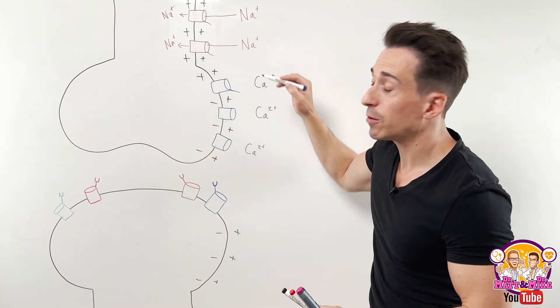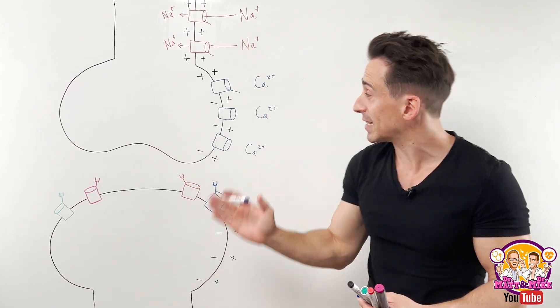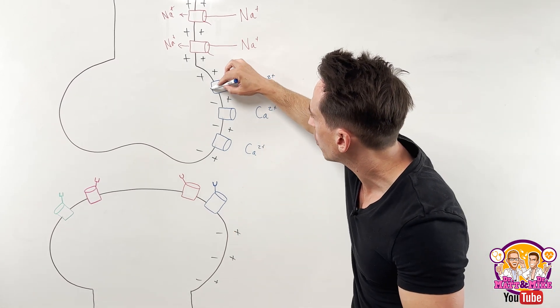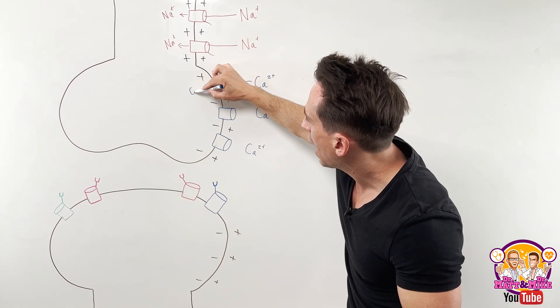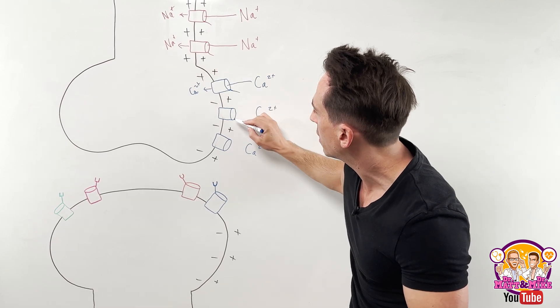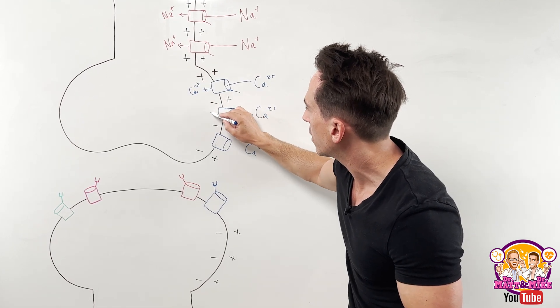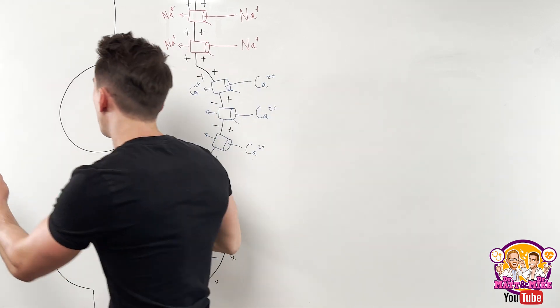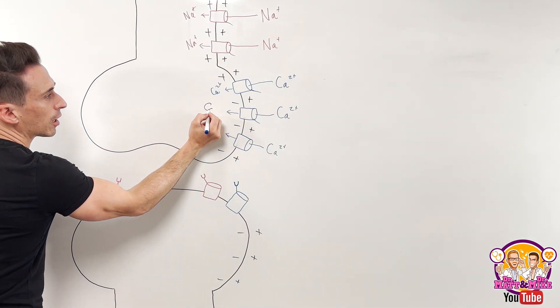The calcium predominantly sits outside the cell as well. So it diffuses down its concentration gradient and goes in. And there's a whole bunch of voltage gated calcium channels at the synaptic terminal, a whole bunch. And so you get huge amounts of calcium now coming in.